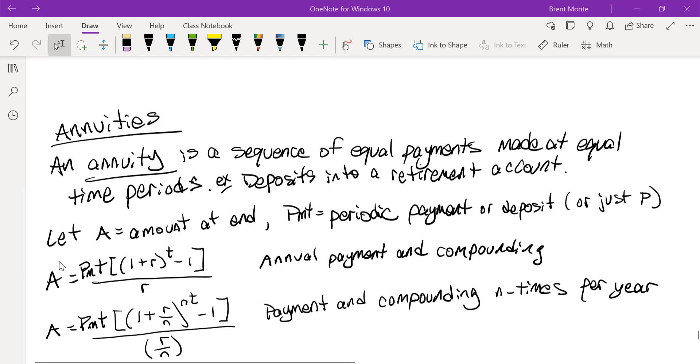We've got two formulas for the amount at the end. The first one is if we're just doing annual payments, so payment once a year at the end of the year, the compounding is just once a year at the end of the year.